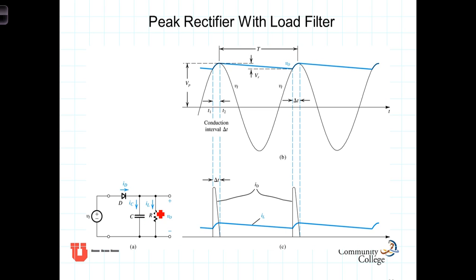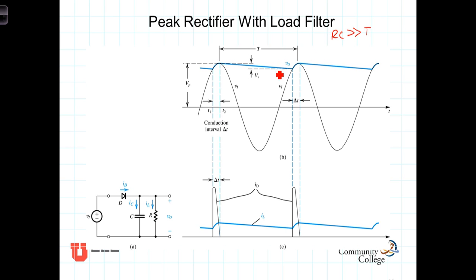Now there's a path for the capacitor to discharge. Rather than the voltage across the capacitor remaining constant, it drops off exponentially, dependent upon the time constant of the single time constant circuit. Our analysis here assumes that we've designed this such that R times C, the time constant, is much greater than the period of the source. That means there will not be a large drop — there won't be a lot of time for the capacitor to drop relative to the time constant, but there will be some drop-off.